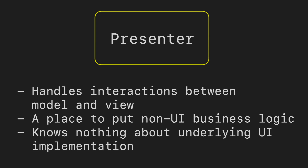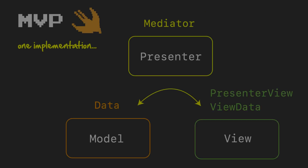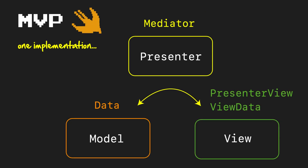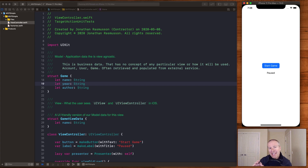The implementation we're going to look at in iOS adds a couple layers of abstraction. We're going to create a protocol called the presenter view, which is how the presenter talks to our view without knowing anything about its underlying detail. We're also going to translate our model data into view data — data specifically for our view — and see how the presenter helps mediate between these two worlds.